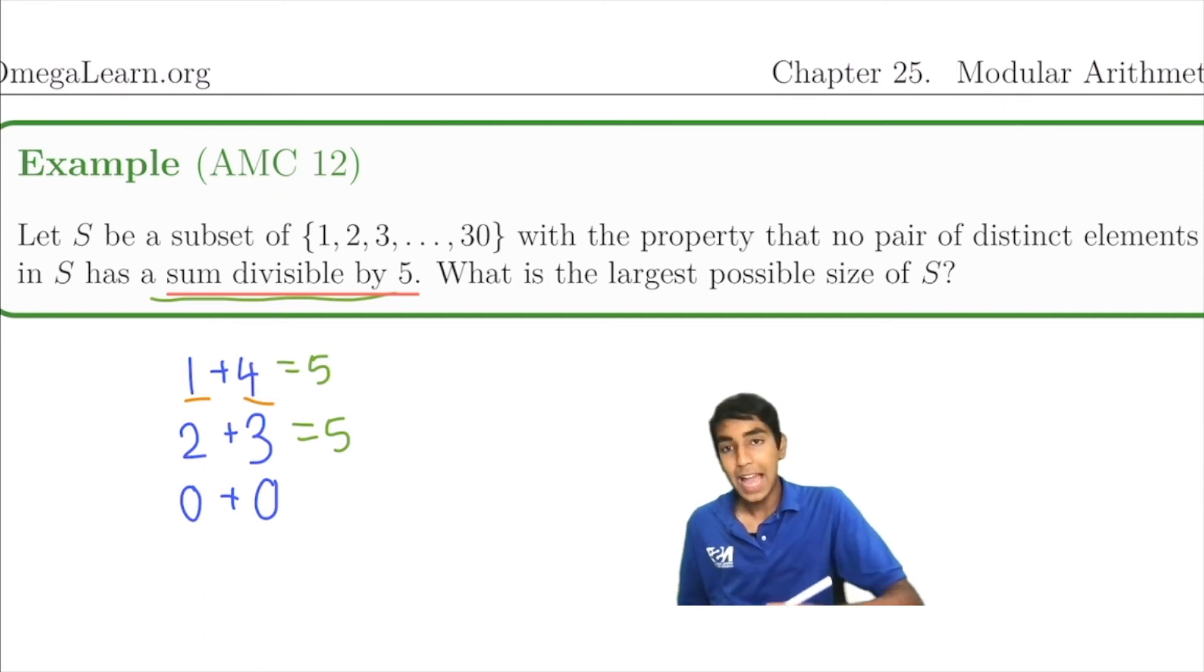It just doesn't work, because it will result in the condition being violated. And we also can't have two numbers that leave a remainder of 0 when divided by 5. But can we have just one? Yes, we can have one number that leaves a remainder of 0 when divided by 5.